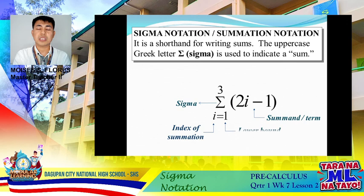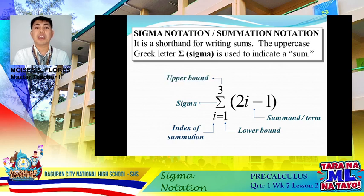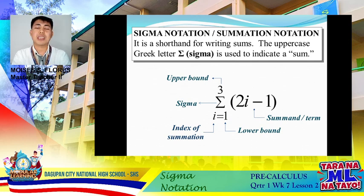This number is called your lower bound — this is usually where we start our substitution when evaluating sigma notation. And the last one is our upper bound — this is usually where we stop when substituting our value into the sigma notation. So how do we read this? 'The summation of 2i minus 1, as i goes from 1 to 3.'